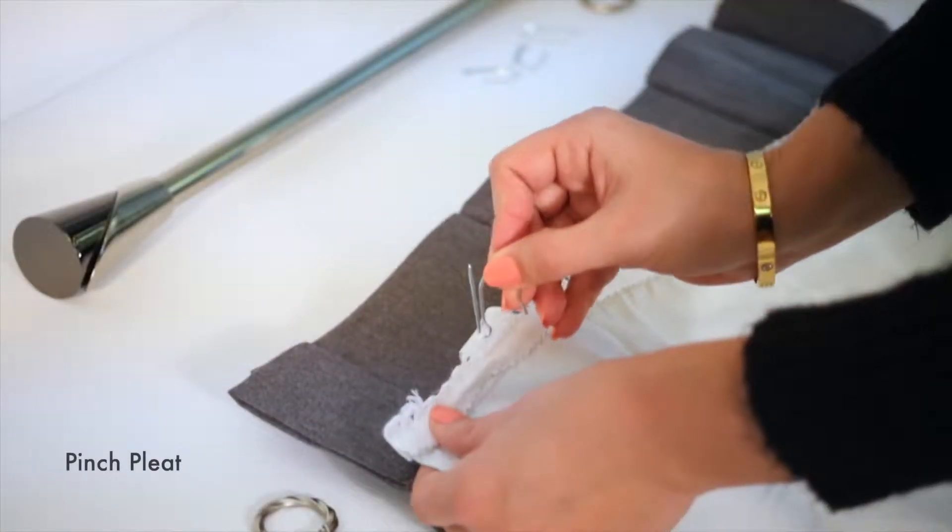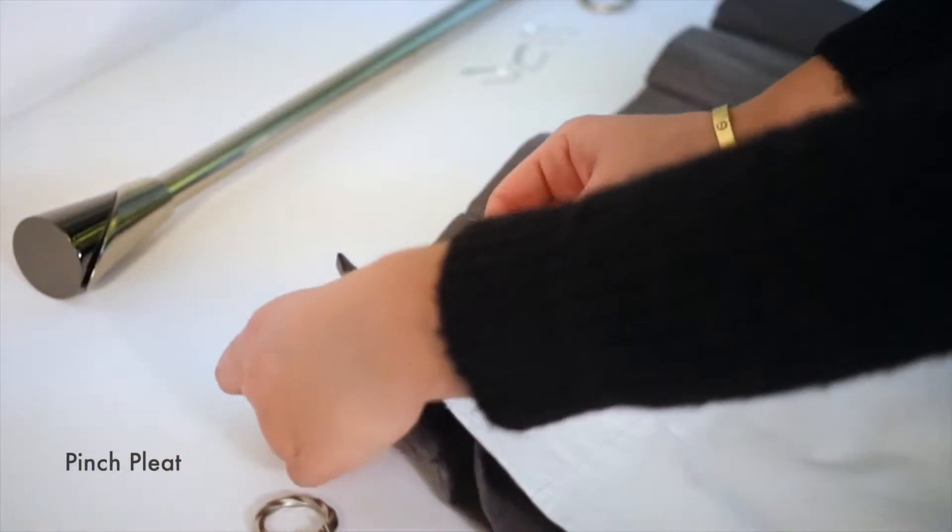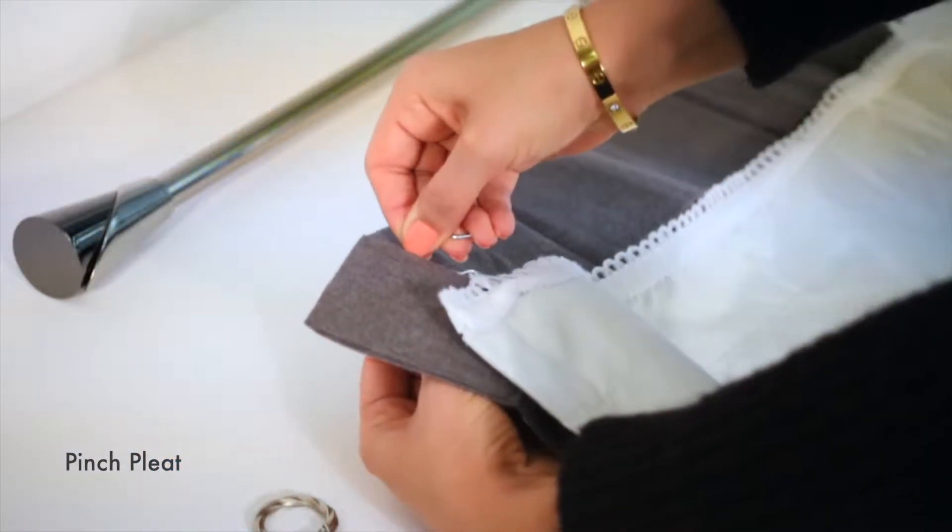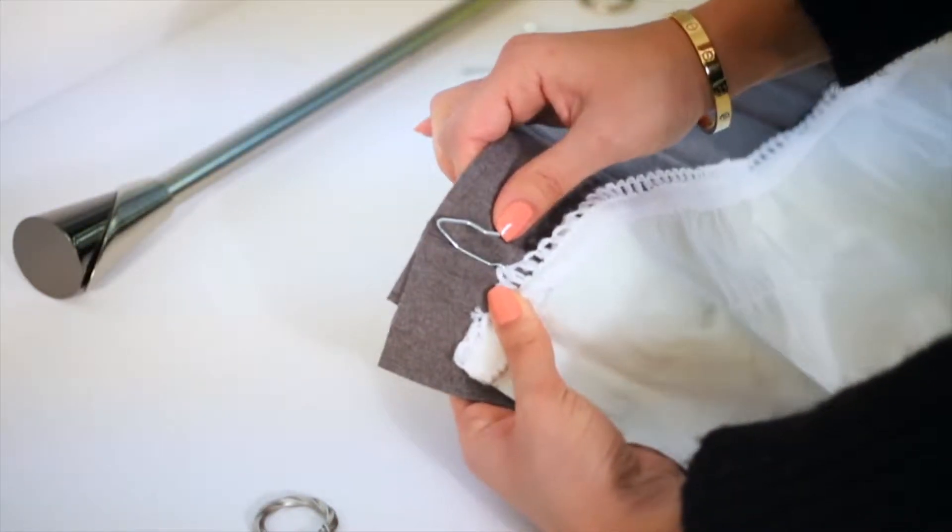Behind a pinch pleated drape, use the loop fringe to hang it on the pinch pleated hooks. Quick and simple!